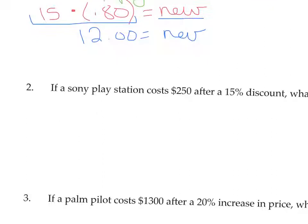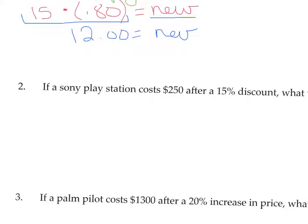If a Sony PlayStation costs $250 after a 15% discount, what was the original cost? I like that same formula: the original times whatever percent you're paying equals the new. This time, we know the new price is $250 because that's what we're paying after the discount.